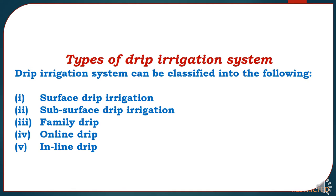Drip irrigation systems can be classified into five types: first, surface drip irrigation; second, subsurface drip irrigation; third, family drip irrigation; fourth, online drip irrigation; and fifth, inline drip irrigation. We will now discuss each drip irrigation system in detail.